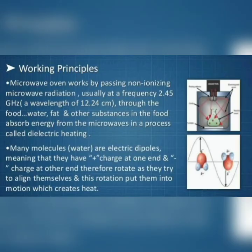Working Principles: Microwave ovens work by passing non-ionizing microwave radiation at a frequency of 2.45 GHz through the food. Water, fat, and other substances in the food absorb energy from the microwaves in a process called dielectric heating.